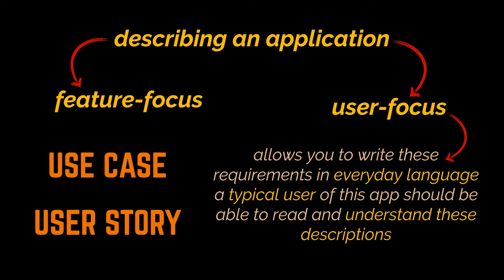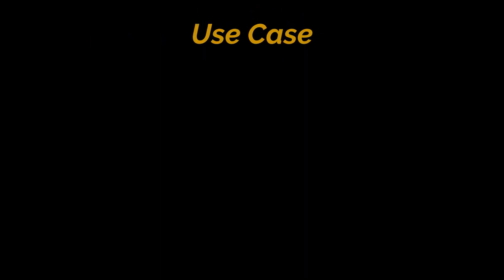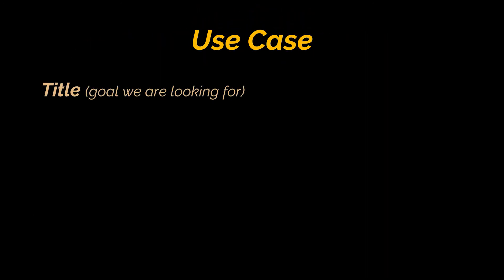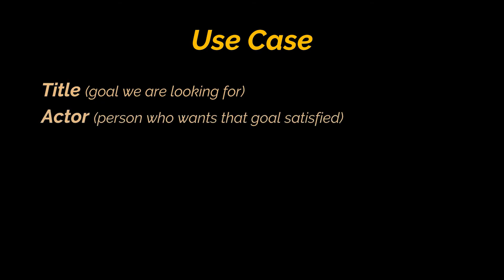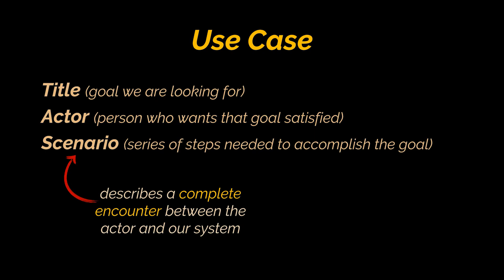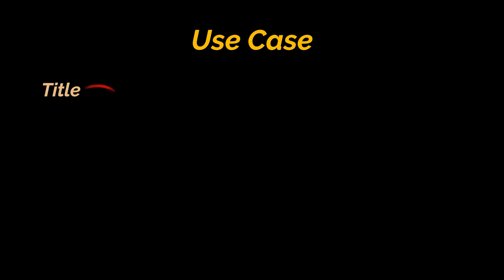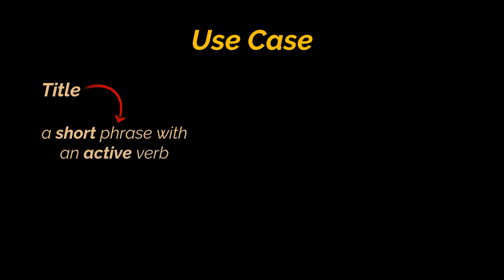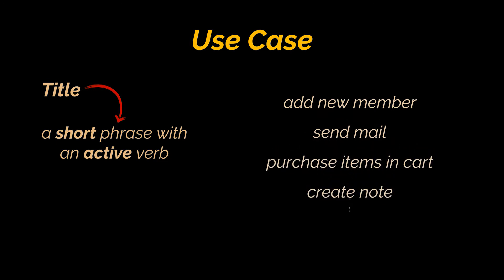The most essential parts of a use case are: the title, which describes the goal we are looking for; the actor, who wants that goal satisfied; and the scenario, or series of steps needed to accomplish the goal. These steps describe a complete encounter between the actor and our system, and can include sections for when things go wrong. The best title for a use case is a short phrase with an active verb — examples include: add a new member, send mail, purchase items in cart, create note, and so on.